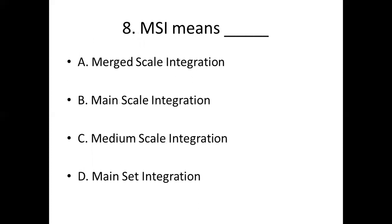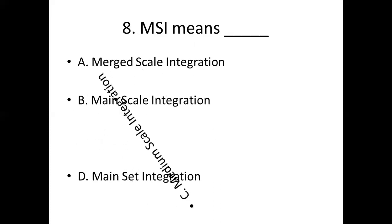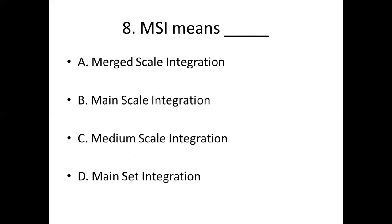Eighth bit. MSI means dash. Option A: major scale integration. Option B: main scale integration. Option C: medium scale integration. Option D: main set integration. Answer: Option C, medium scale integration.